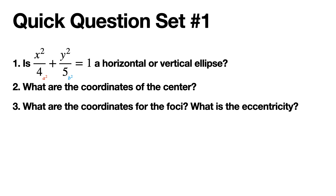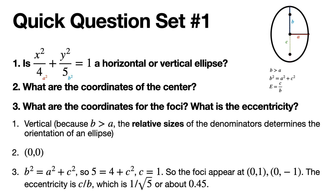First, always identify a squared and b squared. In our treatment a squared is always the horizontal component under x and b squared is always the vertical component under y. So b squared is bigger, and in an ellipse it's the bigger value that determines the orientation. Because b is bigger than a, this is a vertical ellipse. The center is (0, 0).